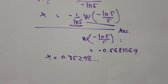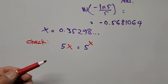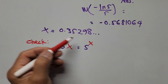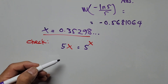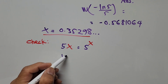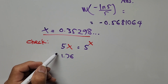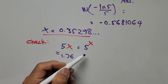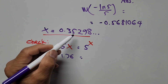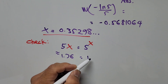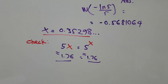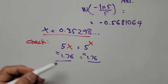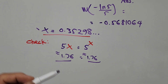Now let's check our answer. We have the original equation 5 times x equals 5 to the power of x. Multiplying 5 by the value of x gives approximately 1.76, and 5 to the power of 0.35298 is also approximately 1.76. We have equal values on the left and right of the equation, which confirms that our answer x equals 0.35298 is correct.